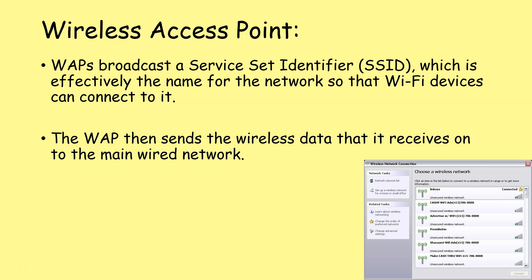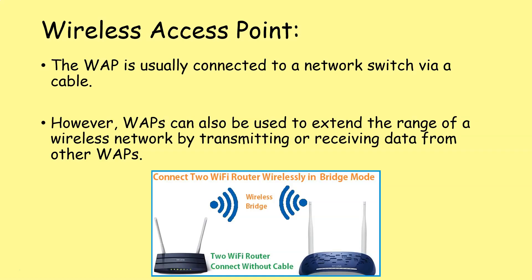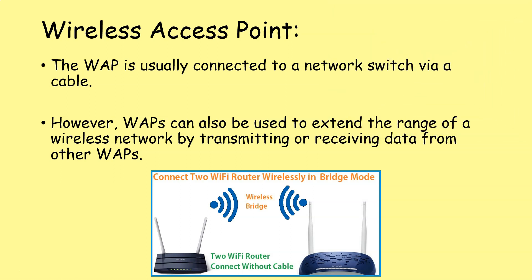WAPs broadcast what we call the service set identifier — the SSID — which is effectively the name for the network, so that wi-fi devices can connect to it. The WAP then sends the wireless data it receives onto the main wired network. You turn on your phone or laptop, look for the right wi-fi signal, see lots of SSIDs, and choose the one you can connect to — usually the one you have the password to, so you can send your data securely. The WAP is usually connected to a network switch via cable, but we can also connect wireless access points to other wireless access points to extend the range of a wireless network.